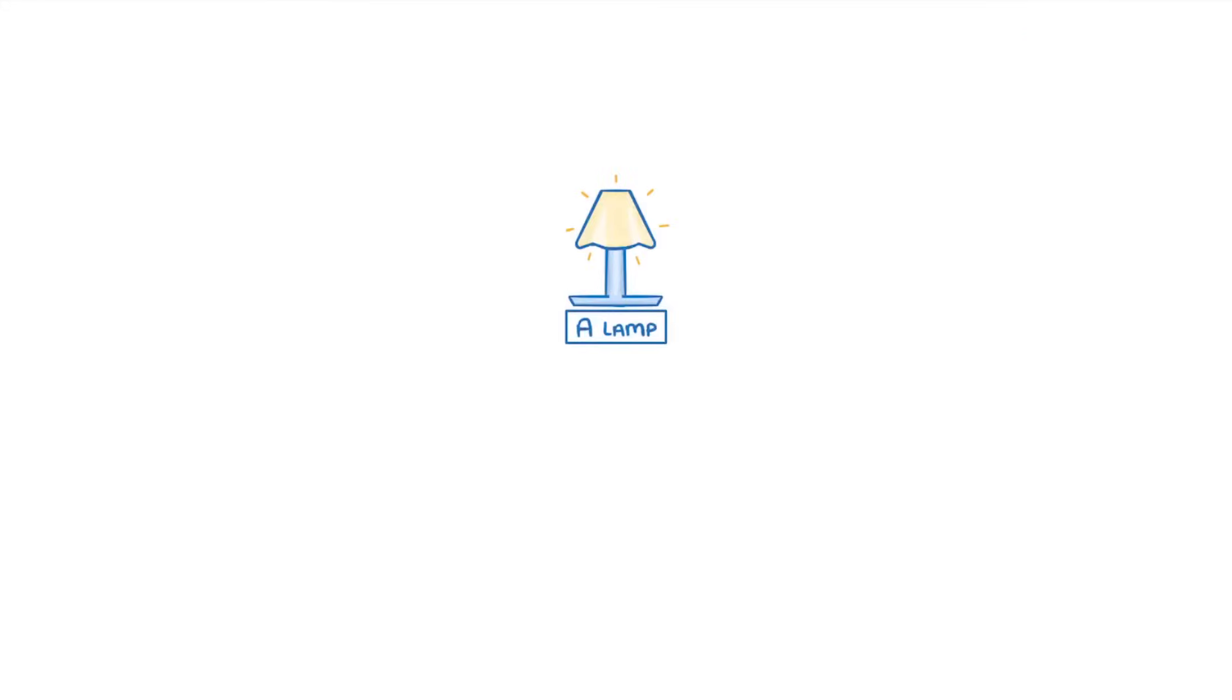Let's start by considering a lamp. Its input energy is electrical energy, while its output is split between light energy and heat energy. Since the purpose of a lamp is to provide light, we consider the light energy as useful energy output, whereas the heat energy is wasted or non-useful energy output.